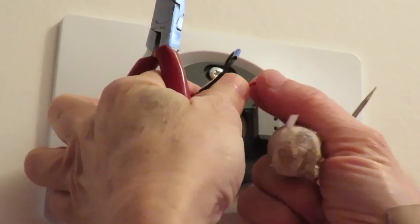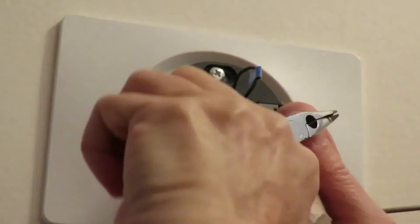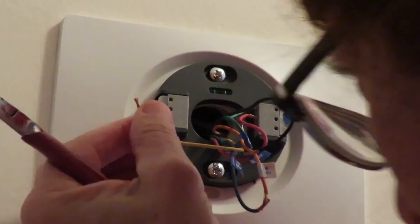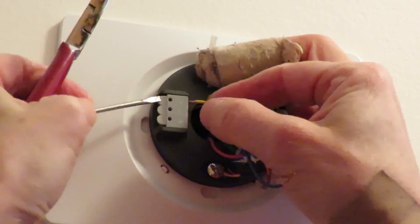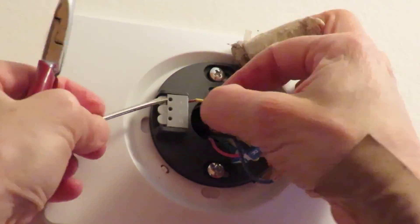Remember the mapping. The green wire goes to the G pin. The red wire goes to the R pin. The yellow wire goes to the Y pin. And the black wire goes to the C, or common pin.